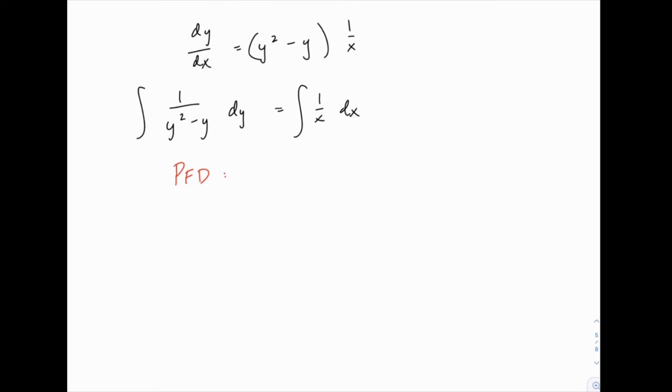So the first step in every partial fraction decomposition problem is to factor the denominator. In this case we can factor out a y that's in common, so we get 1 over y times (y minus 1), and then we set up the form of the partial fractions. In this case we have two linear factors, no repetition, so each of them gets a partial fraction, and then we need to solve for A and B.